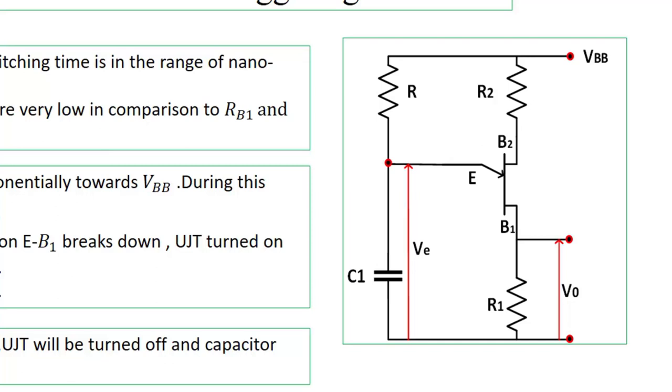In this circuit, suppose initially UJT is off. Then capacitor will charge through resistance R exponentially, and maximum voltage developed across capacitor C1 will be VBB. But if the voltage across the capacitor equals the peak point voltage of the UJT, then the UJT will be on.